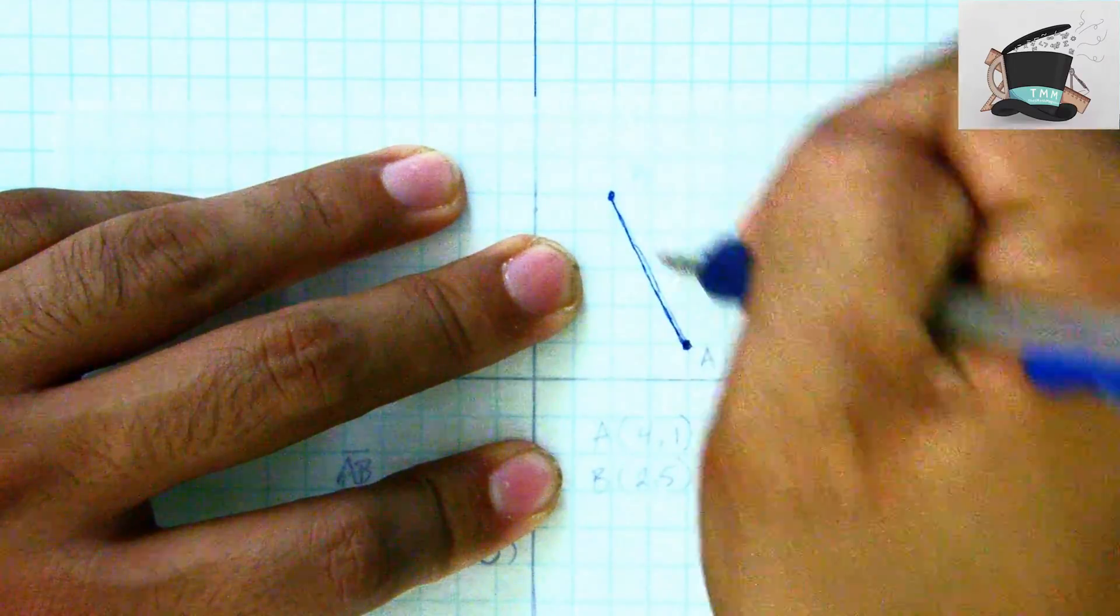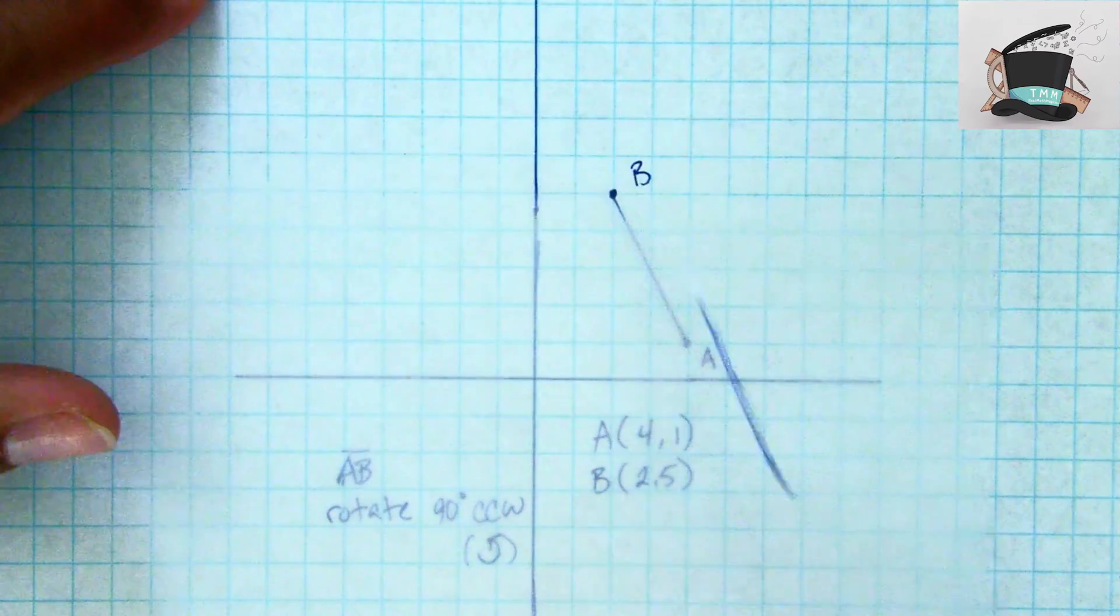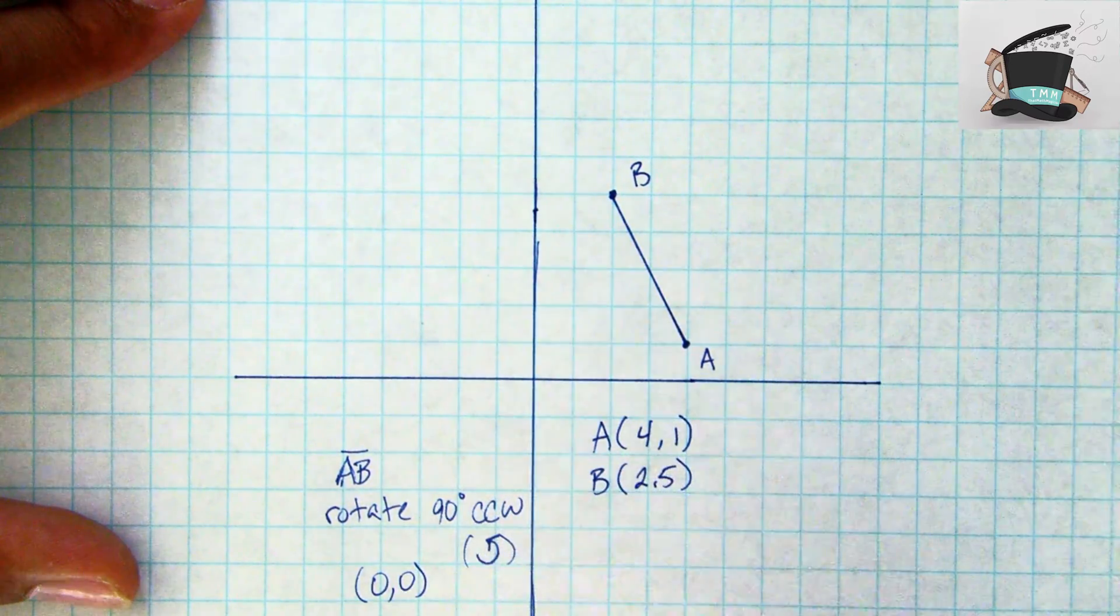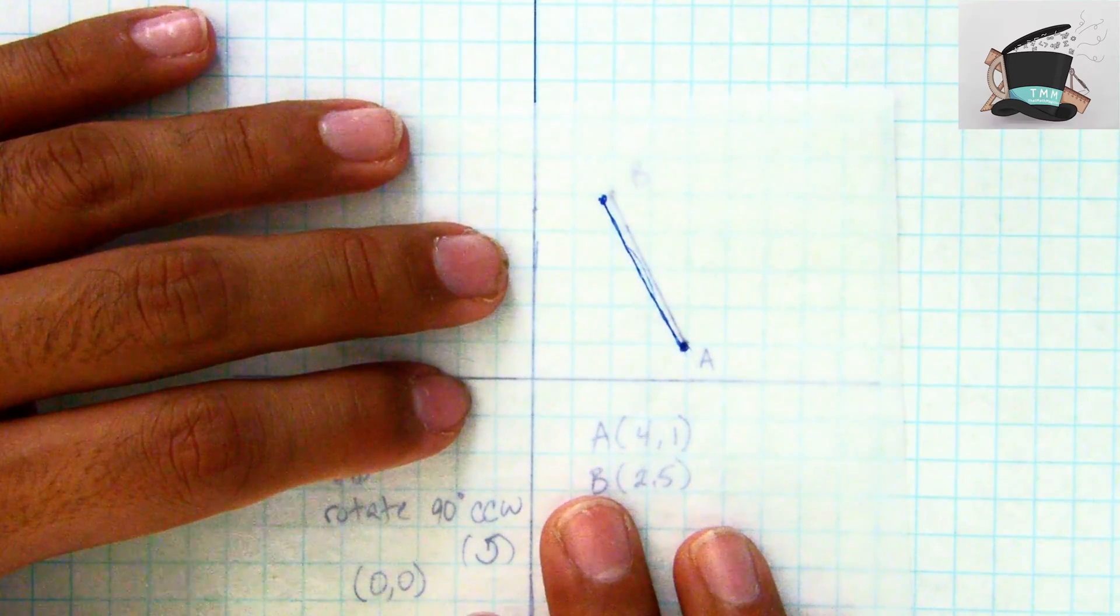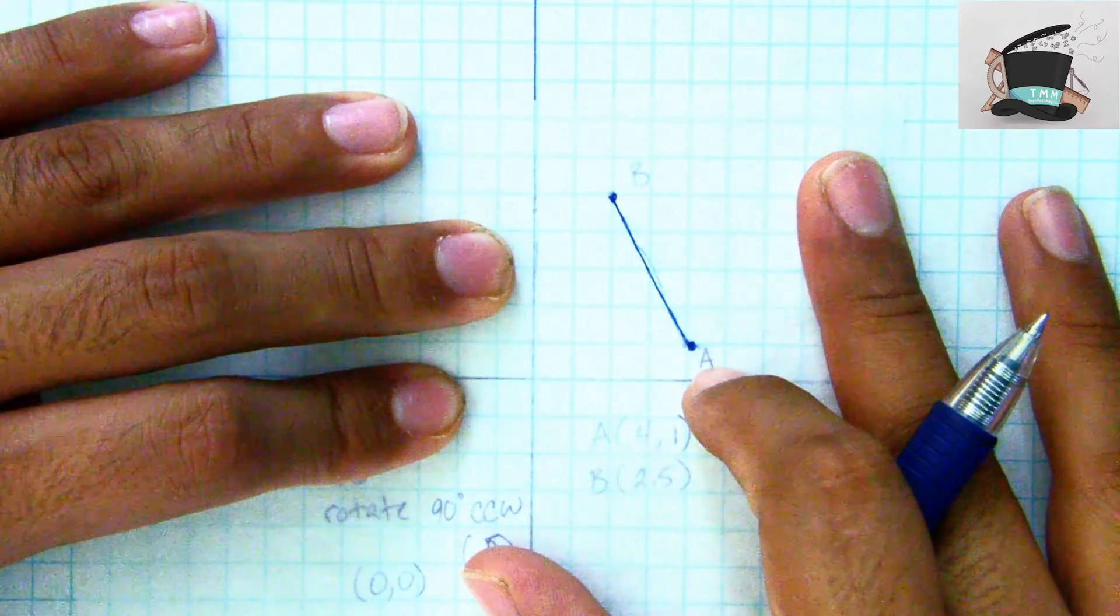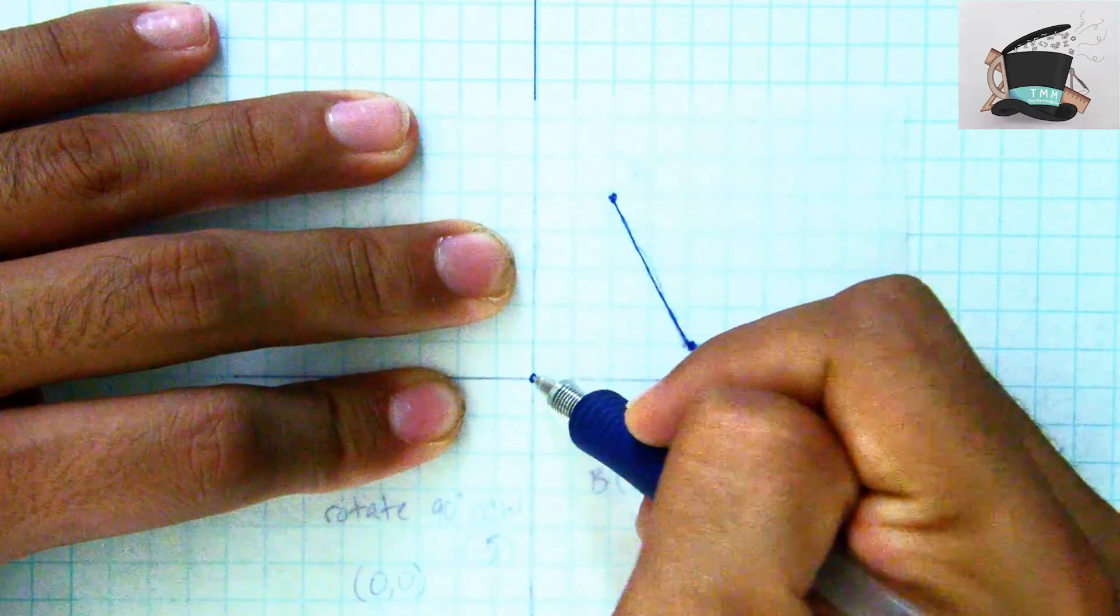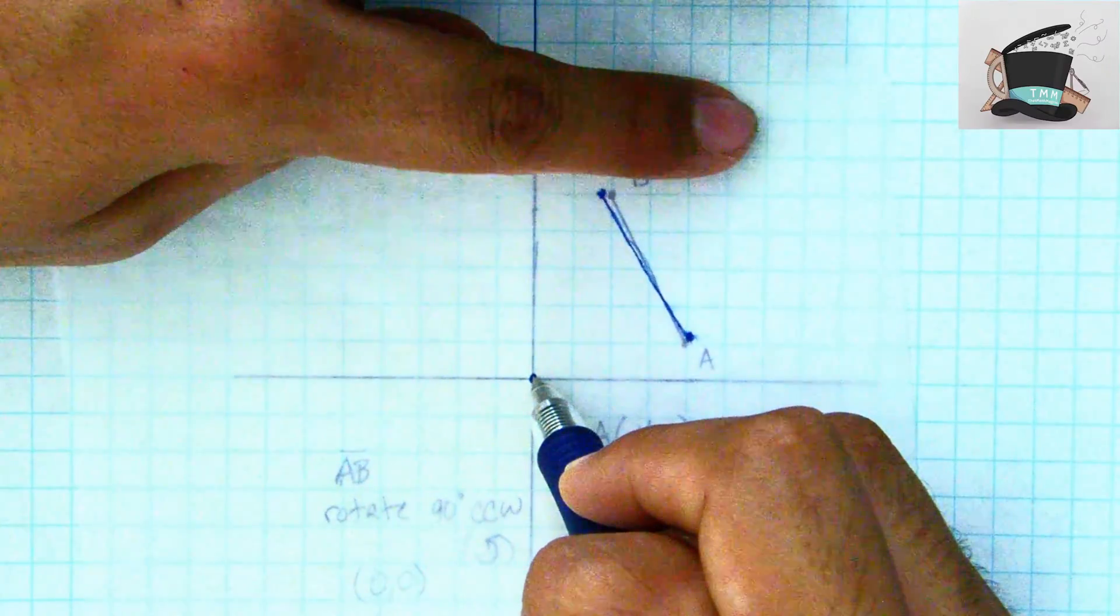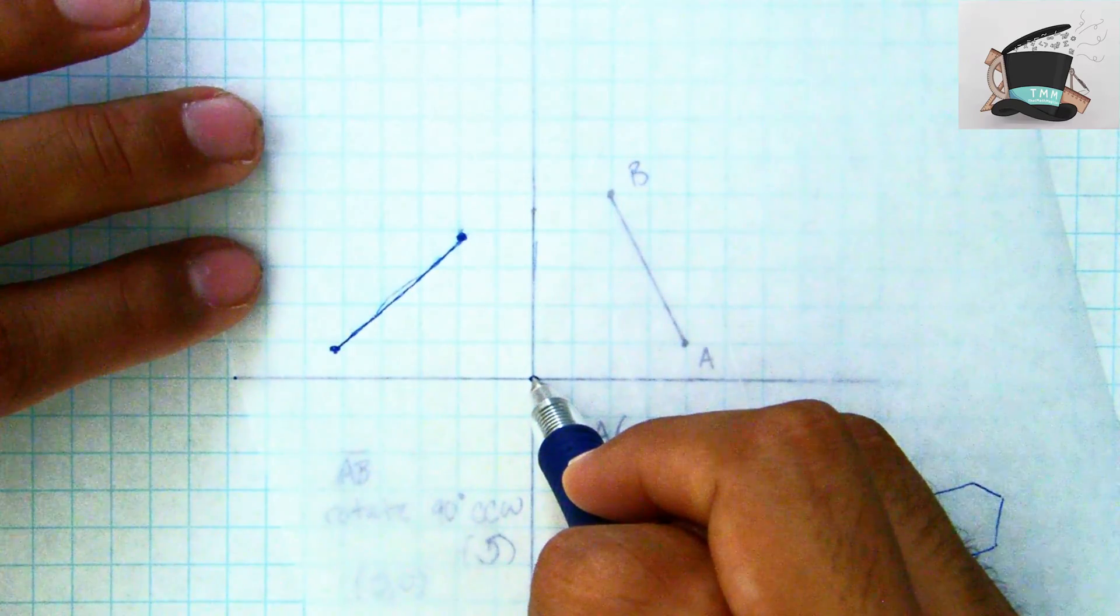Now we want to rotate it 90 degrees counterclockwise. I forgot to mention around the point (0,0). Okay, so putting this back up here, lining it up so it is perfectly on, we're going to take this line segment AB and we're going to rotate it around this point (0,0), 90 degrees counterclockwise. So I take my tracing paper and I turn it one turn so it ends up becoming 90 degrees on the turn.